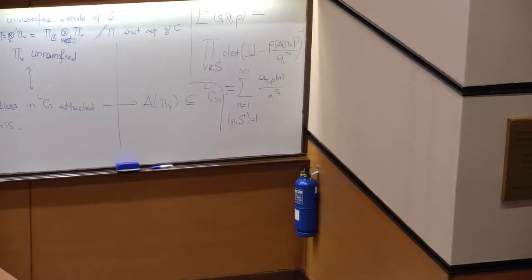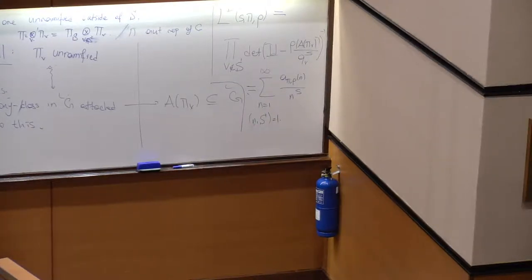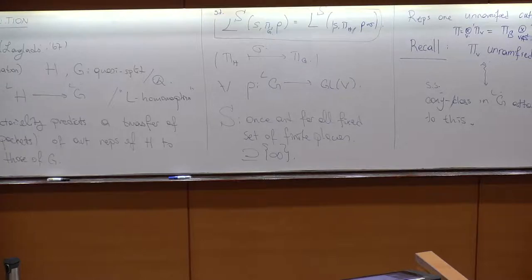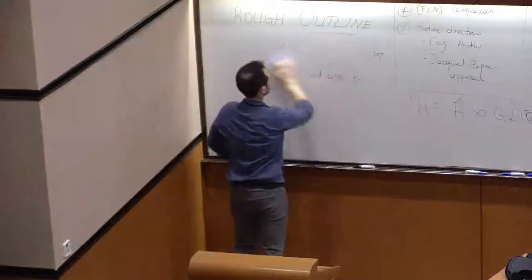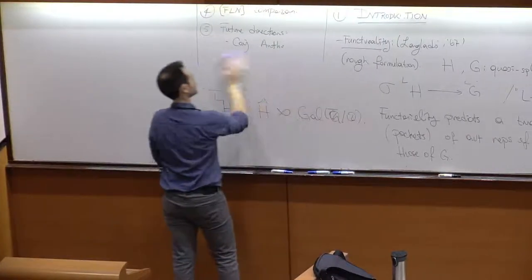Functoriality says: as long as we have a nice map σ, we have the corresponding equality of L-functions. Proving functoriality is quite challenging. Let me give a couple of examples of these L-functions. For G = GL2 and π the trivial representation — which is automorphic — with ρ the standard representation, the Satake parameter is the diagonal matrix with entries q_v^{1/2} and q_v^{−1/2}.